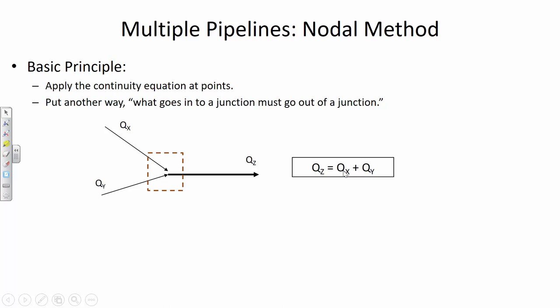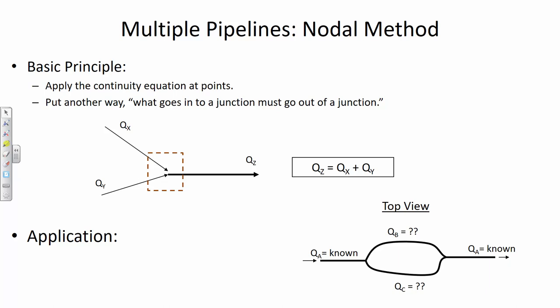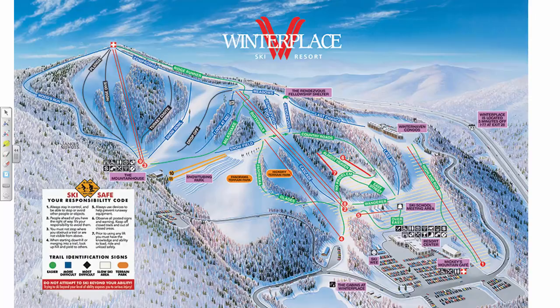We're going to apply the continuity equation to situations where we have water flowing through a pipe, and then the flow splits, and we're not exactly sure how much is going through either of the pipes. This is a top view, but it could have been a side view — it doesn't really matter. The configuration of the pipes, whether vertically or horizontally oriented, isn't going to have any effect on the flow rate. But there are things that do affect the flow rate through either of those pipes, and we're going to talk about those.